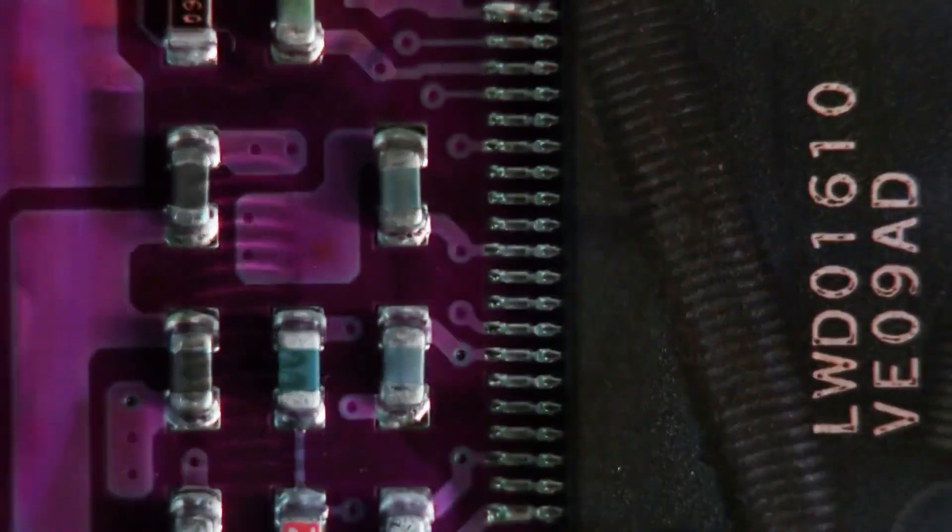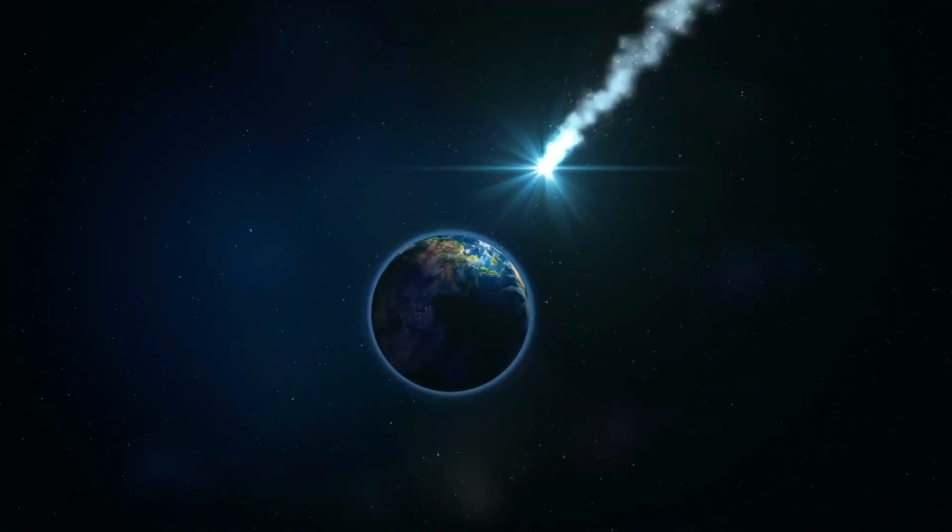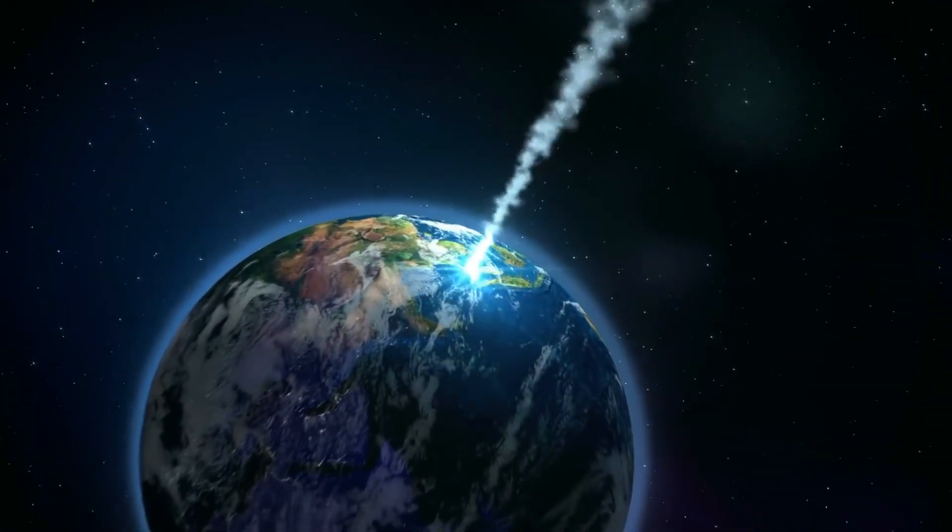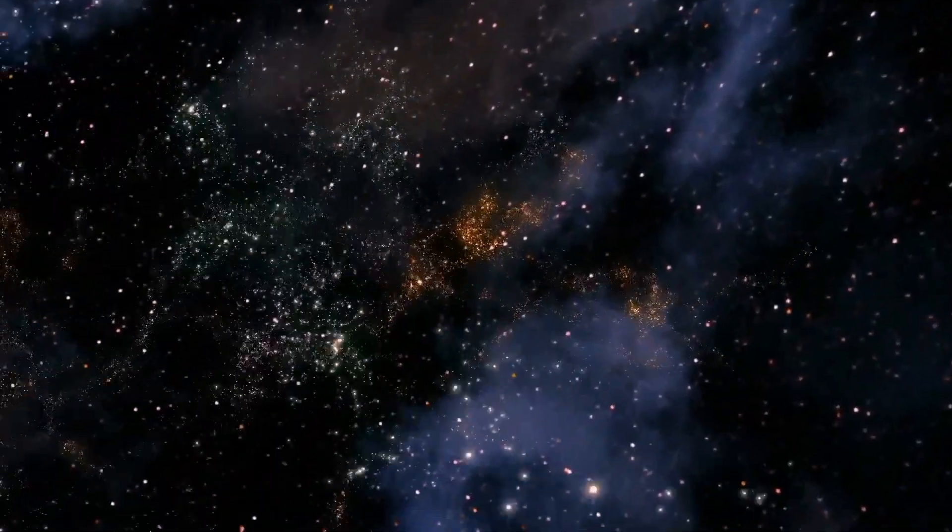100,000 years from now, the titanium in your MacBook starts to corrode. Either a super volcano or a large climate-altering asteroid will likely have affected the Earth. The stars in the heaven will look completely different due to the Earth's movement through the galaxy.